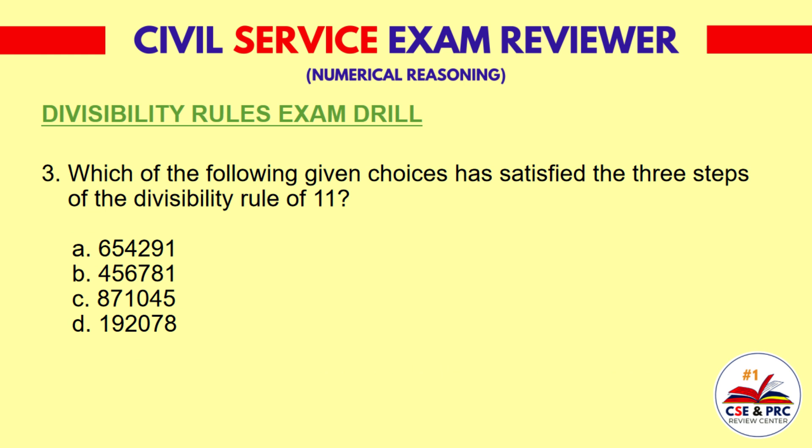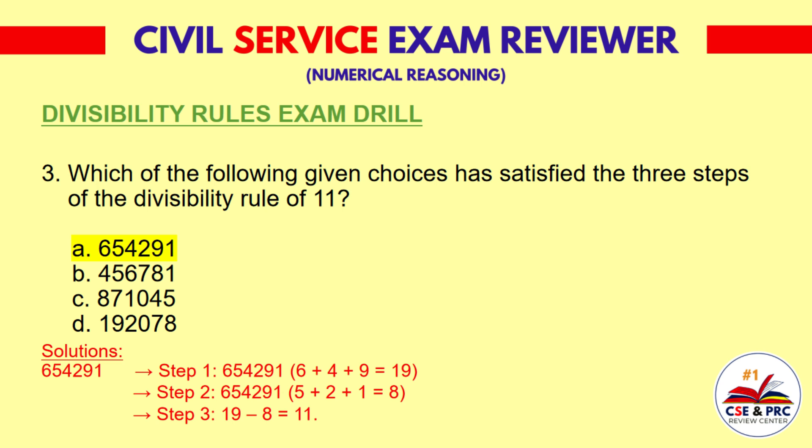Question 3: Which of the following satisfies the three steps of the divisibility rule of 11? A. 654,291. B. 456,781. C. 871,045. D. 192,078. The answer is A: 654,291. Step 1: 6+4+9 equals 19. Step 2: 5+2+1 equals 8. Step 3: 19 minus 8 equals 11.